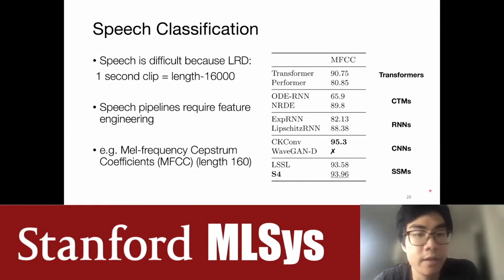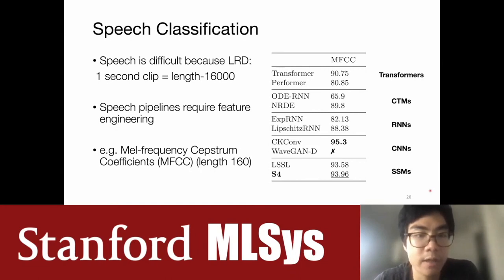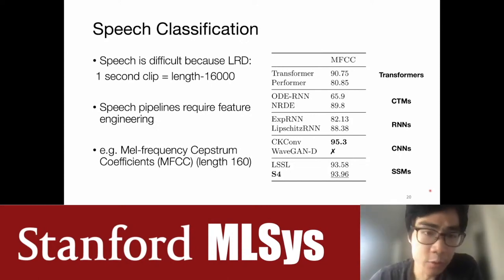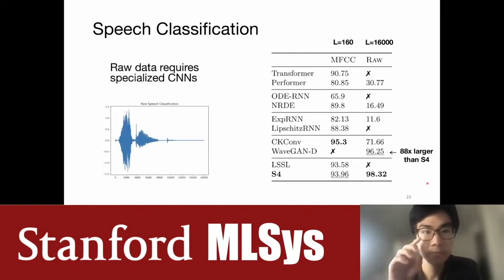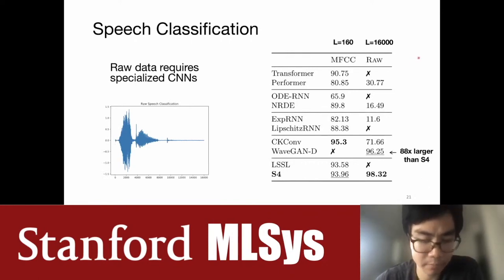The most common approach is using MFCC coefficients. Prior work creates filter banks which reduce the sequence length by a factor of 100, from 16,000 to 160. Using these pre-processed features, most sequence models can perform reasonably — at least 80 to 90-plus percent. The interesting question is how they do on the raw data. On raw data with sequences of length 16,000, pretty much all standard sequence models don't work well at all.